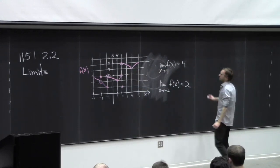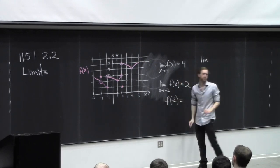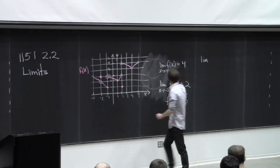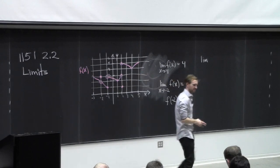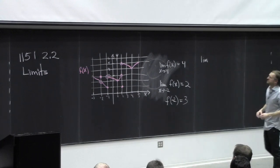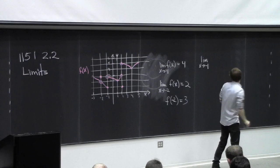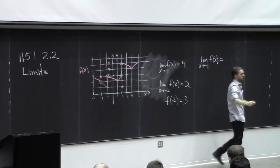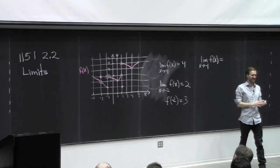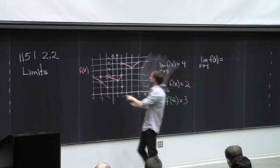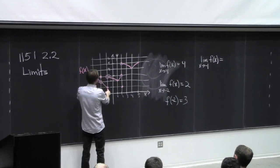What is f of minus two? That's equal to three. So the limit may not be equal to what the function is. I kind of think of it like this: the limit is what the function should be, rather than what it is. Now let's do the limit as x goes to minus one of f of x. Everybody's pausing — that's the right thing to do. It doesn't exist, and here's why: because you can't decide what f should be.